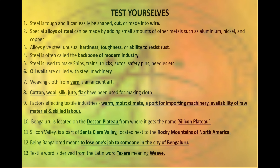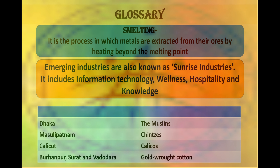These are some important cribs to test yourself. The glossary: smelting is the process in which metals are extracted from their ores by heating beyond the melting point. Some important emerging industries today are called sunrise industries, which includes technology, wellness, hospitality, and knowledge. Dhaka is famous for muslin, Masulipatnam for chintz, Calicut for calicoes, and Burhanpur, Surat, and Vadodara for gold-wrought cotton.